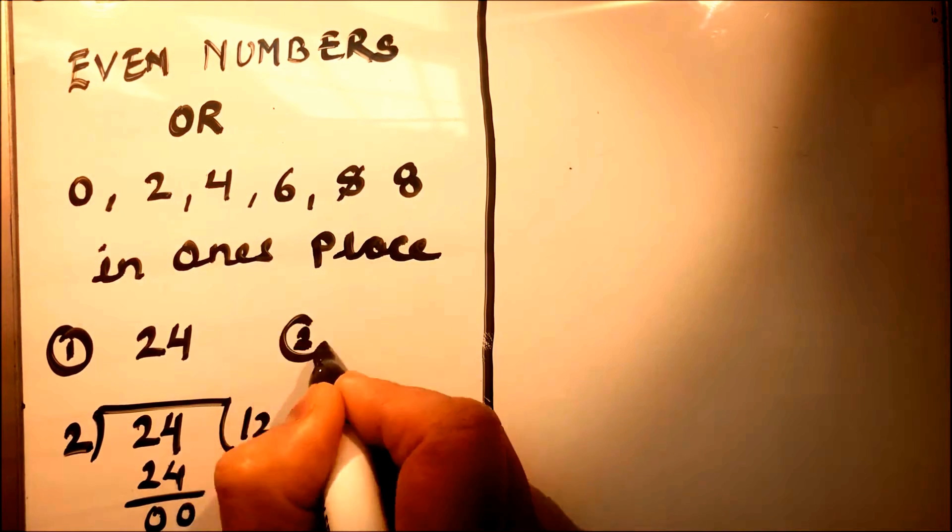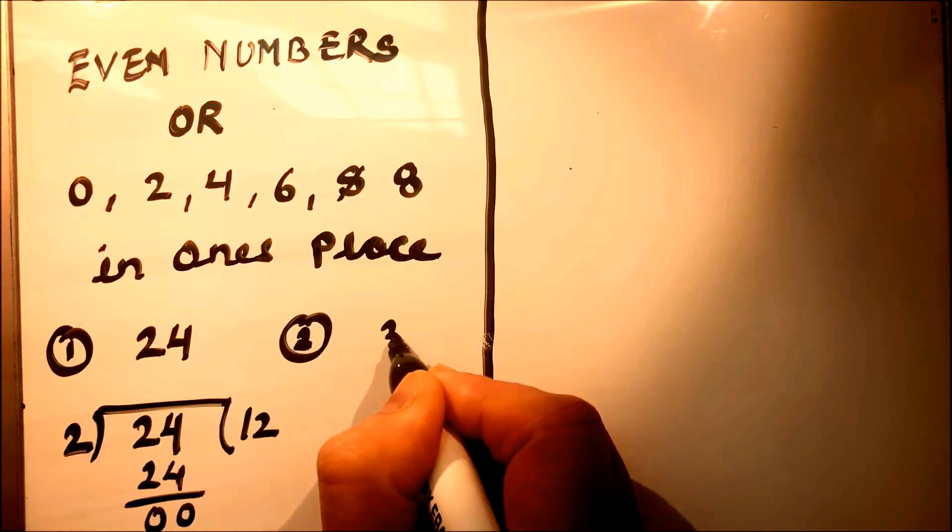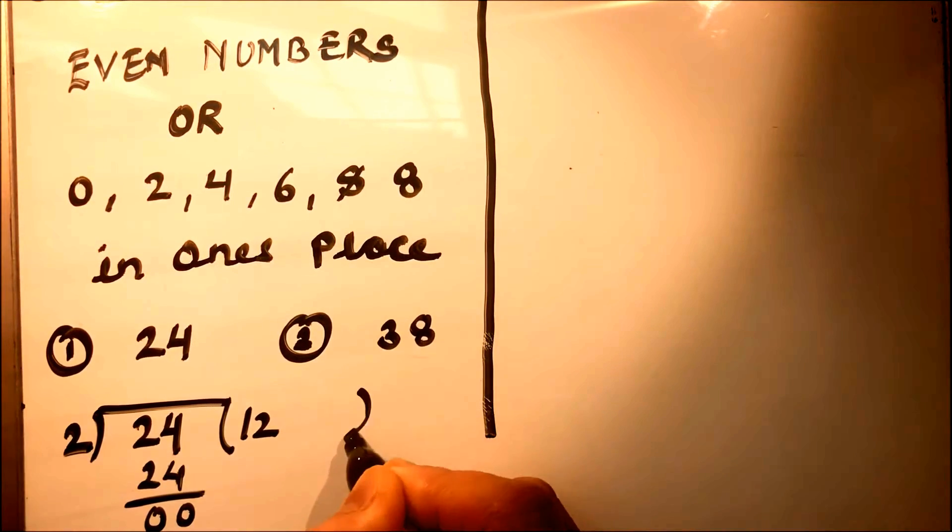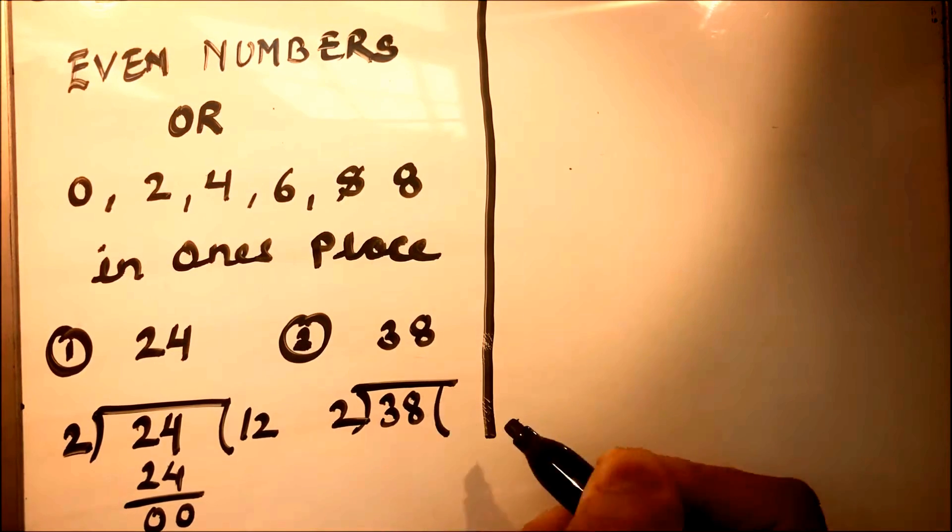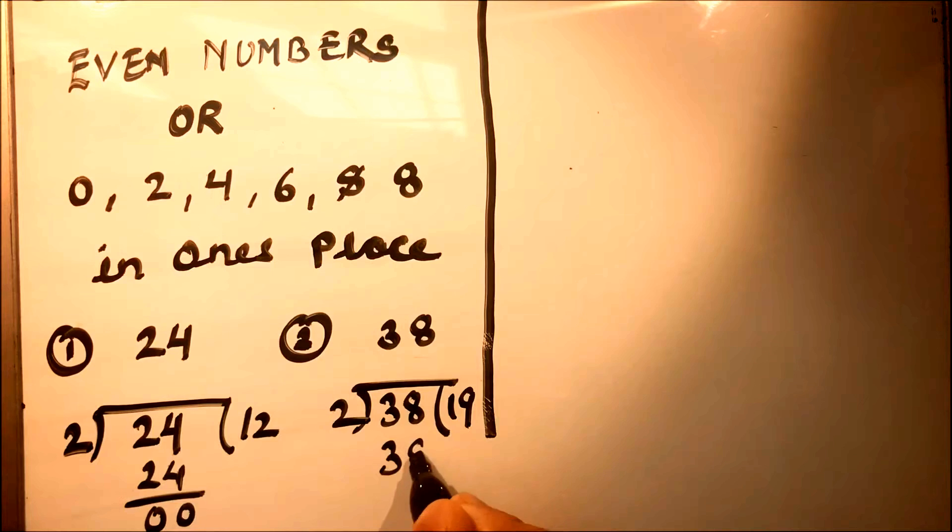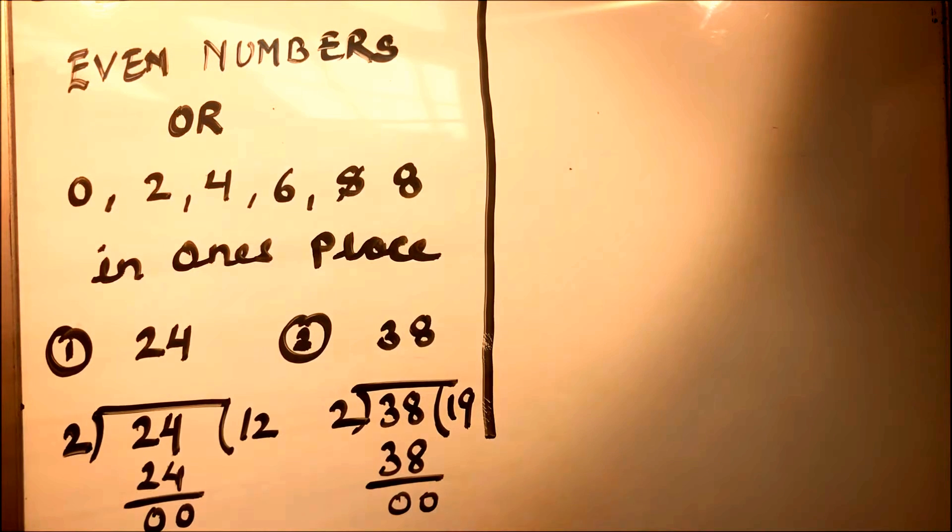If we take another example, suppose we'll take 38. 38 is also divisible by 2 because 19 times 2 is 38 and remainder is 0. Hence, all even numbers are numbers which have 0, 2, 4, 6, and 8 in their ones place. These all numbers are divisible by 2.